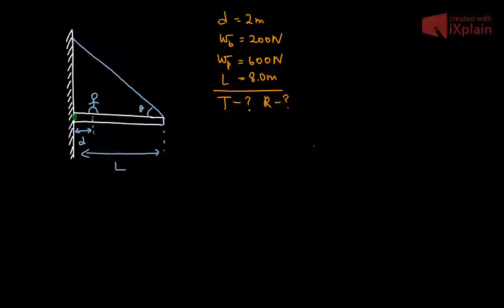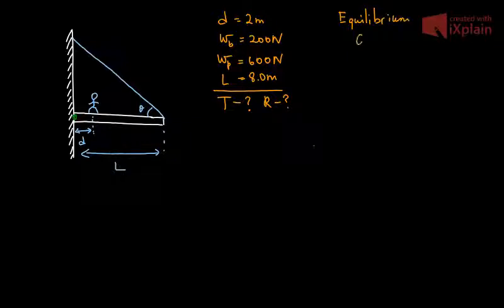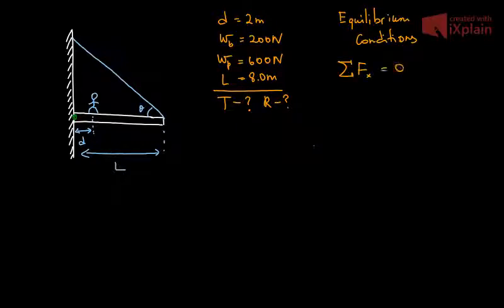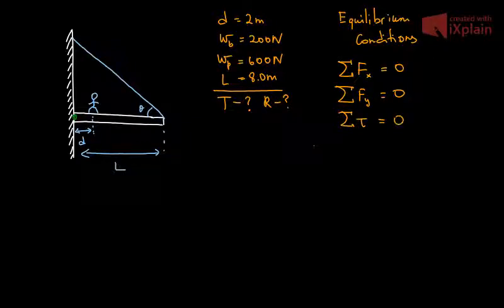This problem is an equilibrium problem because we want the system to remain stationary and in equilibrium. There are four equilibrium conditions that are very useful here. We know the sum of forces on the x-axis equals zero, sum of forces on y equals zero, and sum of torques equals zero. I'm going to name these equations 1, 2, and 3.